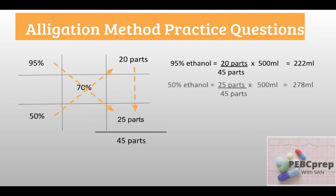Then for 50% ethanol: 25 parts divided by 45 parts multiplied by 500 ml — we get 278 ml. Altogether it makes 500 ml and the concentration will be 70%.